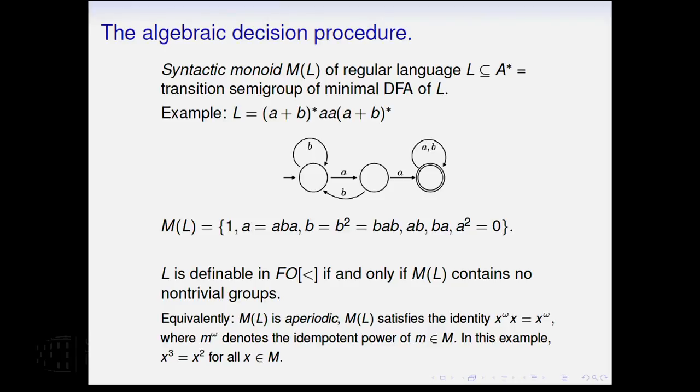Equivalent way to say this, the word for this is that the monoid is aperiodic. You can also express this in terms of identities. Inside a finite semigroup, every element has a power that's an idempotent. There's a unique idempotent among the powers of X, and we'll denote that by X to the omega. So another way to say that the monoid is aperiodic is that it satisfies this equation. In the particular case of this one example, this collapses to X cubed equals X squared for every X of the monoid.